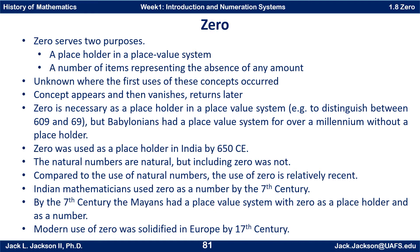In India, with the Indian numerals, zero was used as a placeholder at least by 650 of the Common Era, which is, in one sense, not that long ago. They also used a symbol for zero similar to our normal symbol that we use today. The natural numbers are natural, but including zero was not. Natural numbers were used in pretty much any ancient culture — as far back as we have any recorded history. But including zero was, relatively speaking, a relatively recent event.